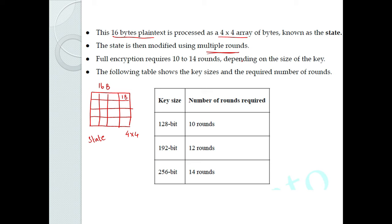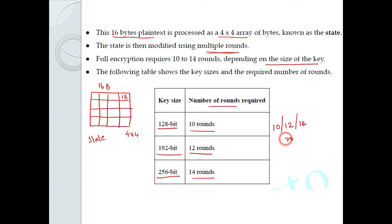The number of rounds depends on the size of the key. If we use a 128-bit key, there will be 10 rounds. If we use a 192-bit key, there will be 12 rounds. If we use a 256-bit key, there will be 14 rounds. So AES uses 10, 12, or 14 rounds depending on the key size.